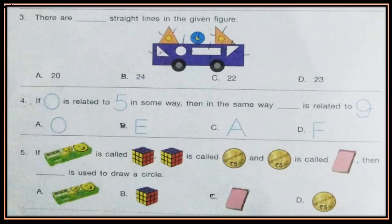Question 5. If box is called cube, cube is called coin, and coin is called book, then dash is used to draw a circle.